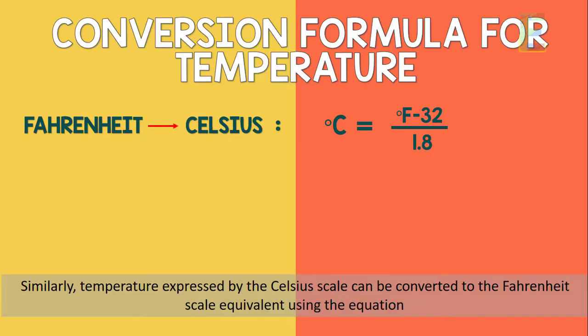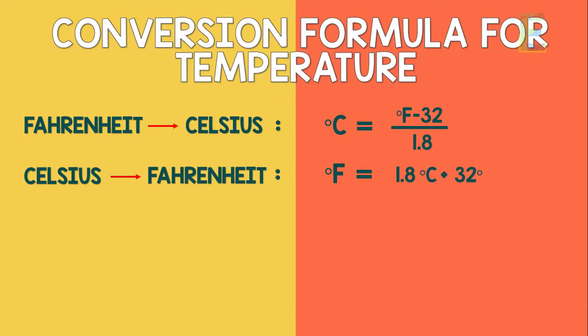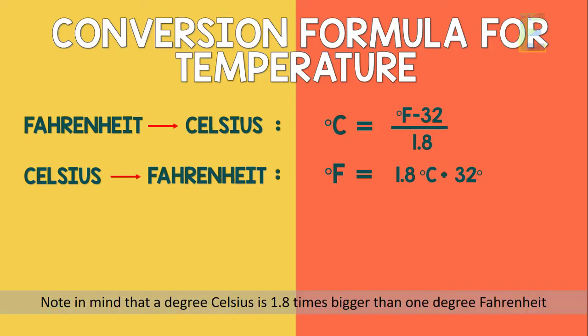Similarly, temperature expressed by the Celsius scale can be converted to the Fahrenheit scale equivalent using the equation degrees Fahrenheit is equal to 1.8 times degrees Celsius plus 32 degrees. Note that a degree Celsius is 1.8 times bigger than 1 degree Fahrenheit.